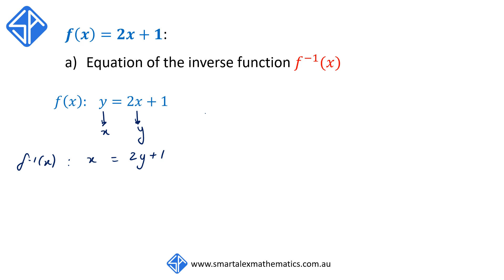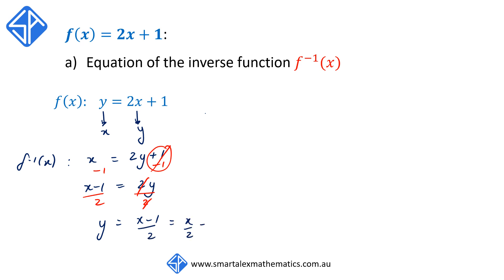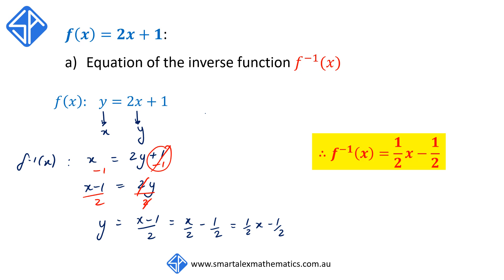We want to make y the subject, so we subtract 1 from both sides, giving us x minus 1 is equal to 2y. We then divide both sides by 2, giving us y is equal to x minus 1 over 2, which we can write as x over 2 minus one half, or one half x minus one half. So our inverse function has the equation one half x minus one half.